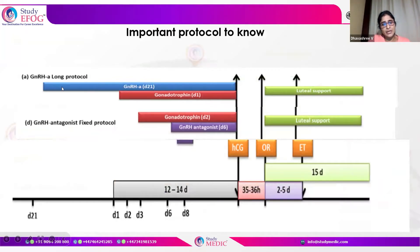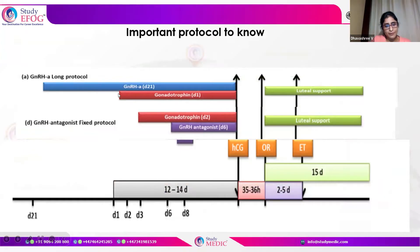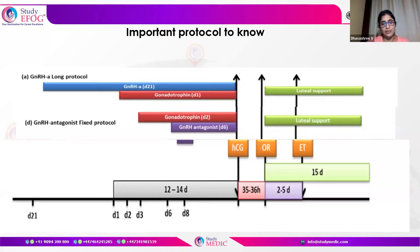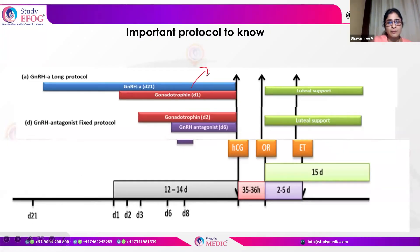In the long protocol, the GnRH agonist is given from day 21 of the previous cycle, causing long-term suppression of endogenous FSH and LH. When there is a total lack of endogenous LH, we start stimulation with gonadotrophins — usually from day two — which causes ovarian stimulation while LH remains suppressed. The GnRH agonist injections must be given from day 21 of the previous cycle until the day of the trigger, to prevent the LH surge.